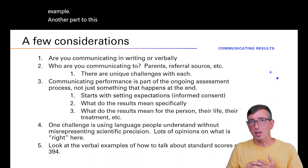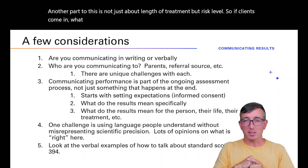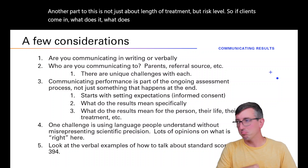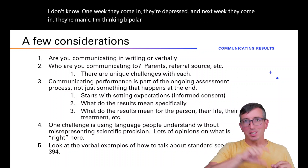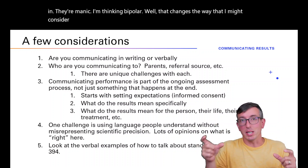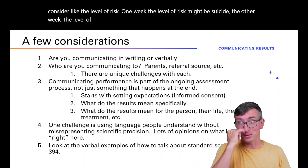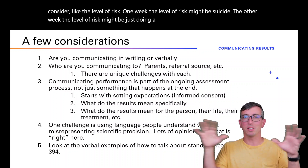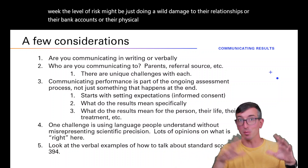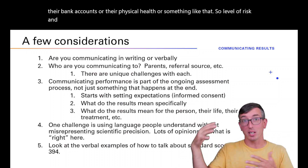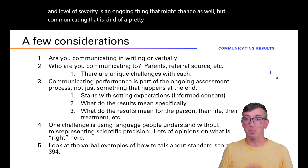Another part of this is not just length of treatment but risk level. If a client comes in one week depressed and the next week manic, you're thinking bipolar — and that changes the level of risk to consider. One week the risk might be suicide; the other week it might be damage to relationships, bank accounts, or physical health. Level of risk and severity is an ongoing thing that might change, and communicating that is a pretty important part of the process.